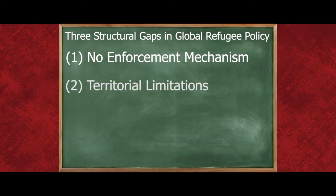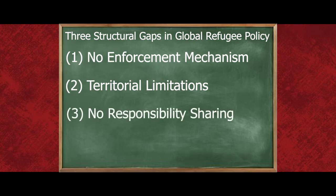They have little formal recourse if national governments fail to do so. Second, the refugee protection regime does not include any obligations for countries to protect refugees outside of their national borders. This creates an incentive for countries to prevent refugees from reaching their territory if they wish to avoid obligations towards refugees. And third, although the preamble of the Refugee Convention recognizes that the responsibilities associated with providing asylum may fall unevenly on countries and that refugee governance thus requires international cooperation, it provides no guidance on how those responsibilities can be shared. Thus, wealthy countries, and countries that host very few refugees, often fail to provide adequate financial or logistical support to countries that are home to large numbers of refugees.